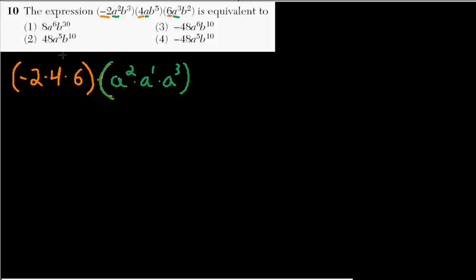And next we have the powers of b. So b to the third, b to the fifth, and b squared. So we'll write this in here. We have b to the third times b to the fifth times b squared.